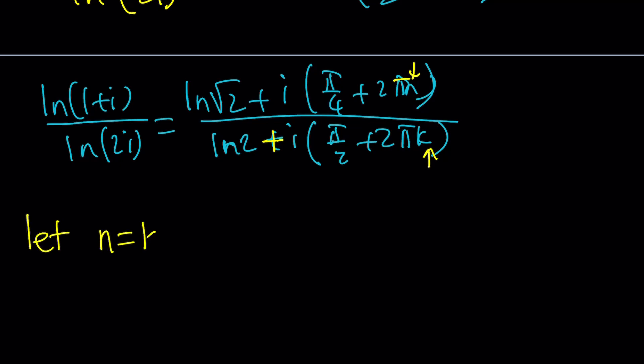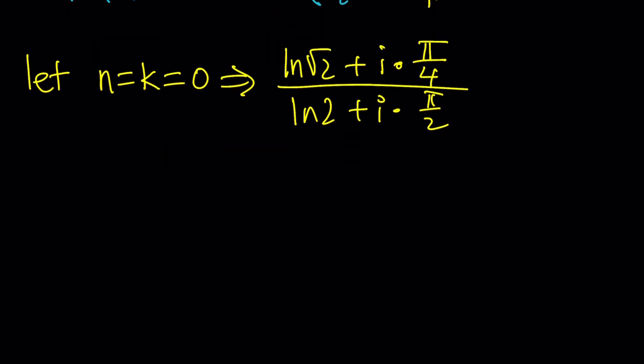How about if n and k are both 0? Then from here, we get the following. ln root 2 plus i times pi over 4 divided by ln 2 plus i times pi over 2. Does this ring a bell? If it doesn't, let's follow along. Now, ln root 2 is basically ln 2 to the power 1 half. And by using the properties of logs, we can basically write this as 1 half ln 2 plus i times pi over 4 divided by ln 2 plus i times pi over 2.